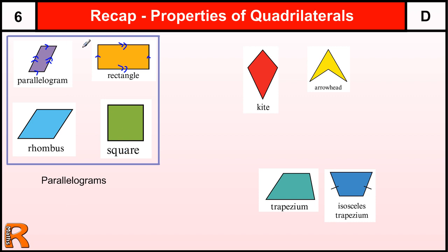So these are all parallelograms, but if they're not rectangles, rhombuses, or squares, then we call them parallelograms. Otherwise we define them by their more accurate name. Rectangles, rhombuses, and squares are all parallelograms.